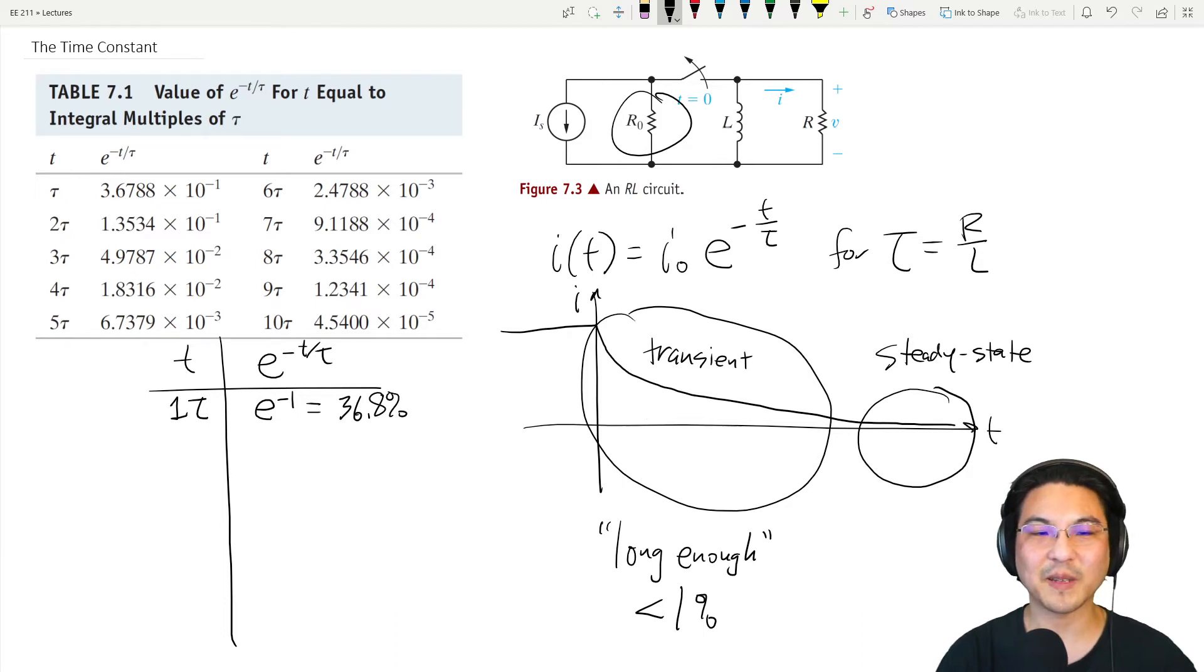If you wait one time constant—for example, say the resistor is 10 ohms and the inductor is 100 henries—the time constant would be 0.1 seconds, like 100 milliseconds. So you wait 0.1 seconds, we're now down to 37 percent of the original value if we waited one time constant.